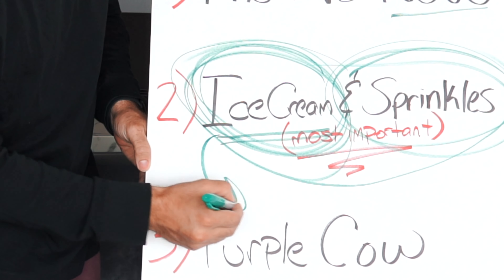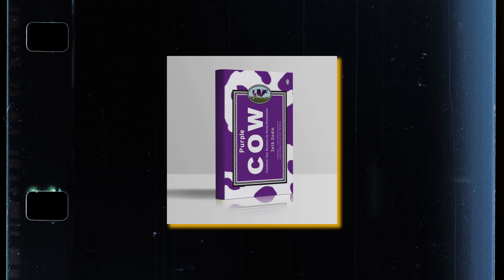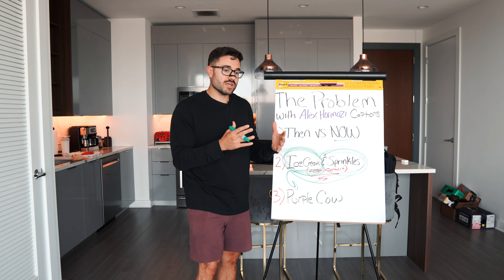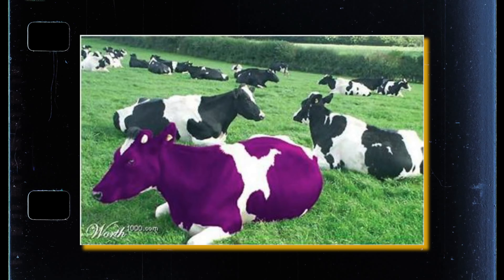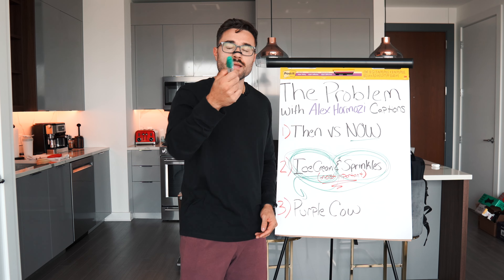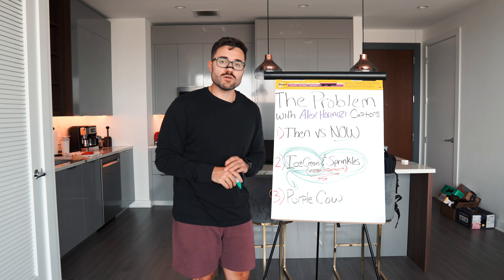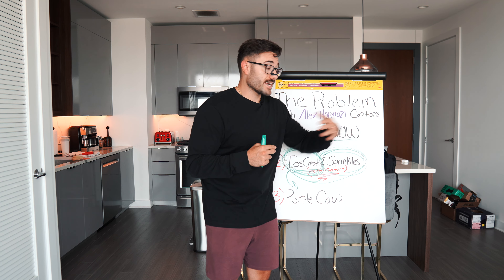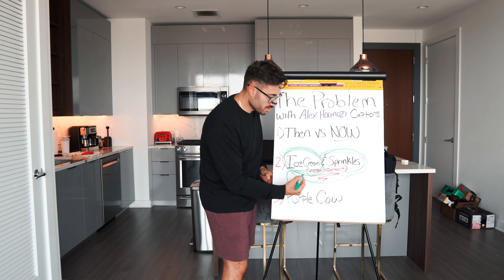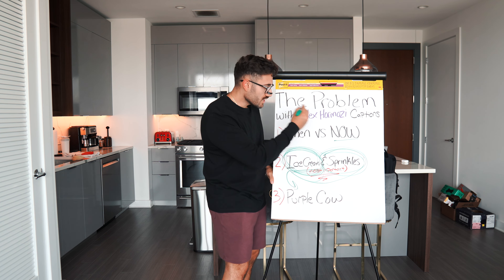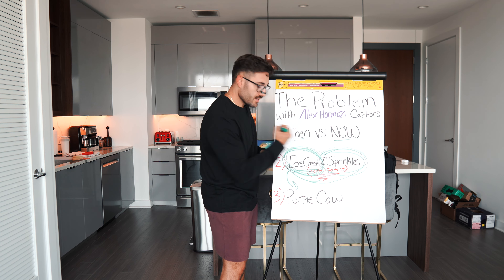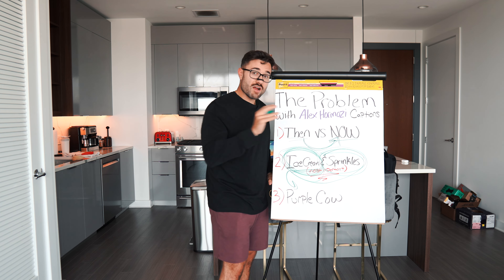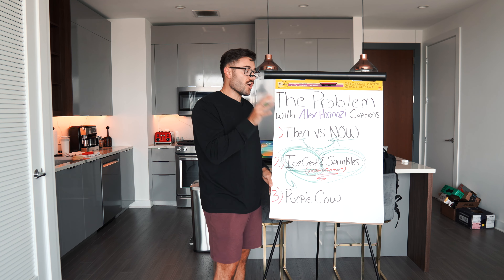Finally, let's come down here to the purple cow. Seth Godin wrote a wonderful book on marketing, and essentially the premise is to stand out in the marketplace. When you think of a purple cow, it's something that stands out to you — it's something that's different. Same thing with social media. What are the purple cows on social media? What are the pieces of content that stand out to you? Who are the people that stand out to you? Or are you blending in with everyone else and looking the exact same? Because the reason why they worked then is because it was brand new. It stood out. Now, the reason everyone is struggling is because they all look the same.